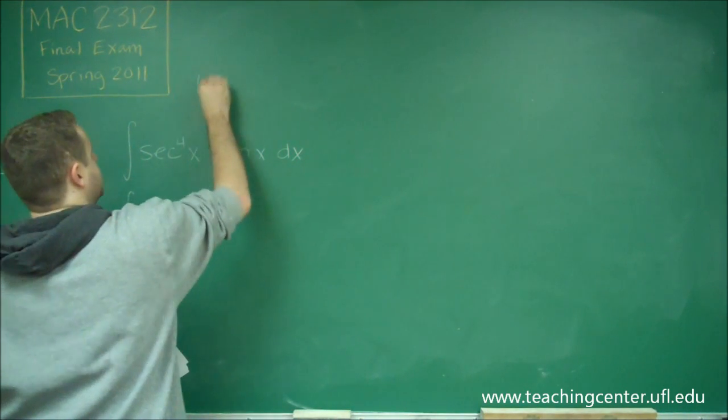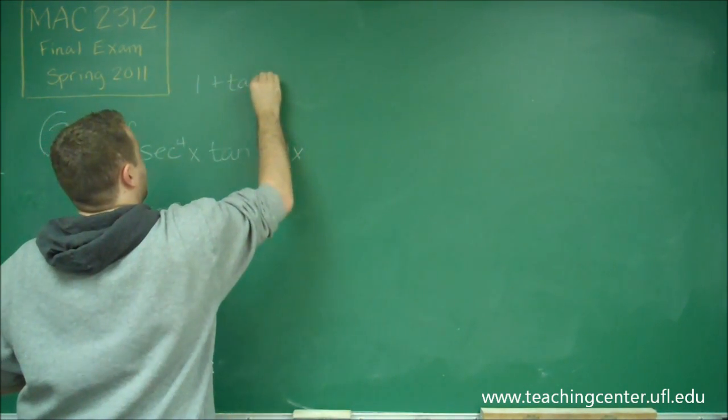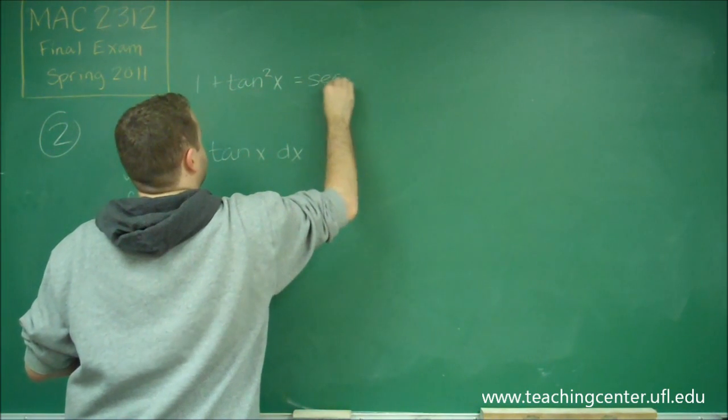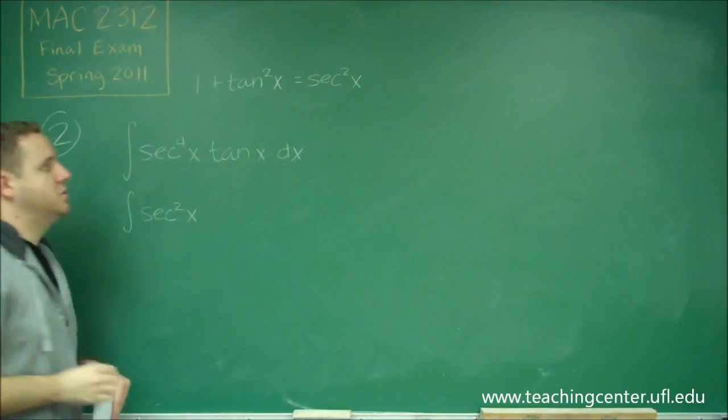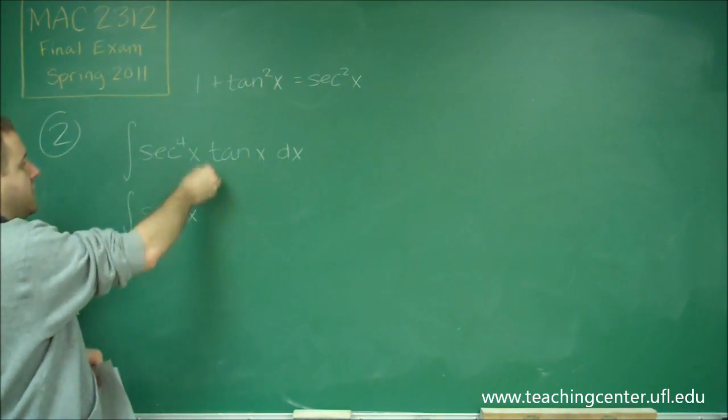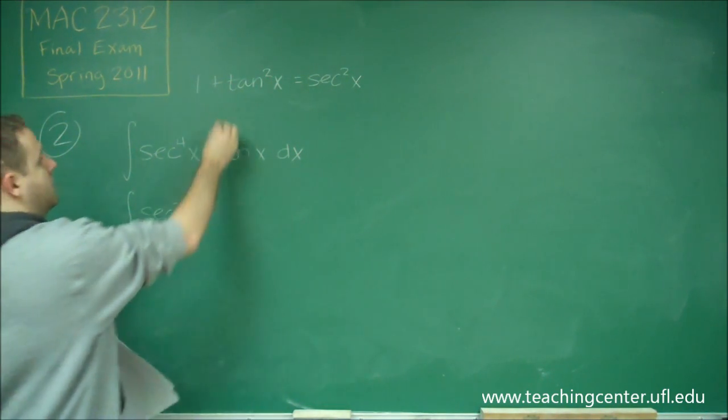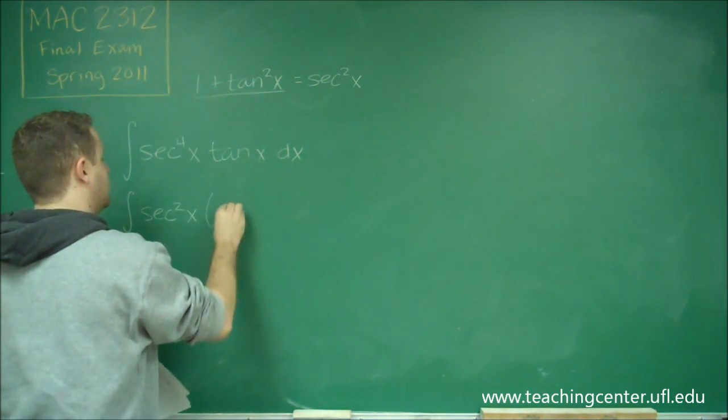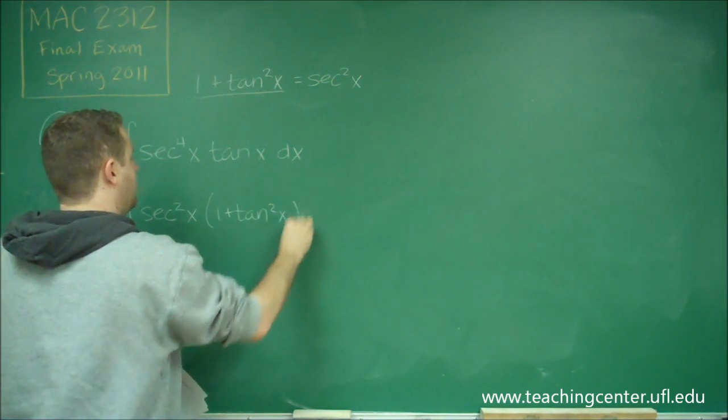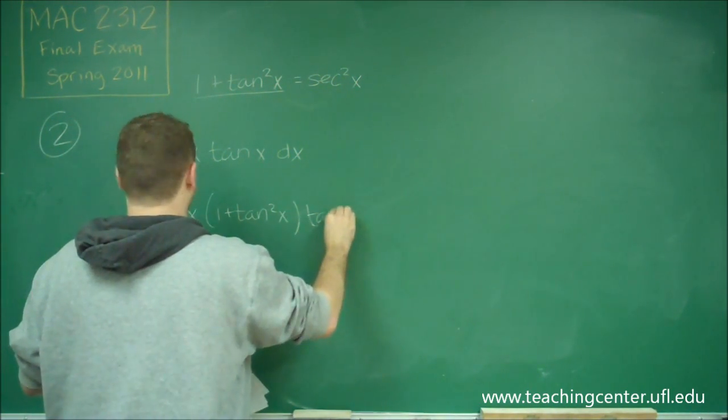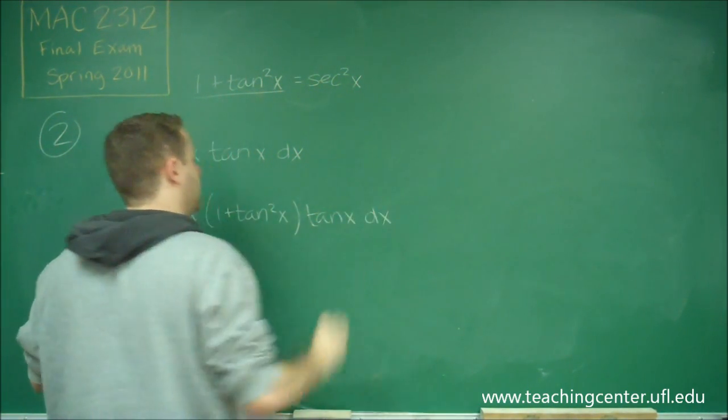So remember you have the identity 1 plus tan squared x equals secant squared x. That's one of your trig identities. So the other instance of secant squared x we're going to convert to 1 plus tan squared, and then we still have the tangent x dx.